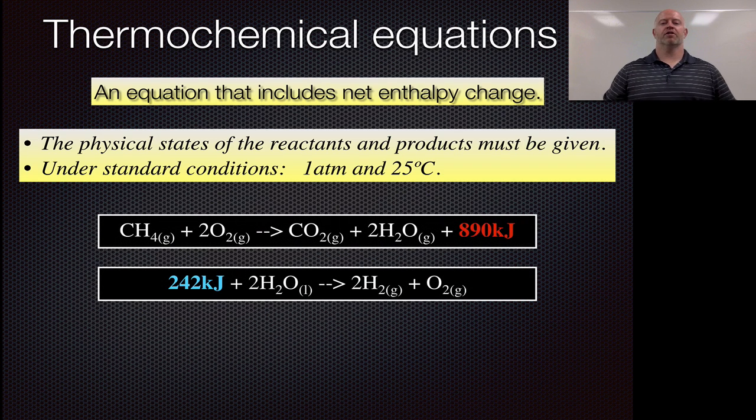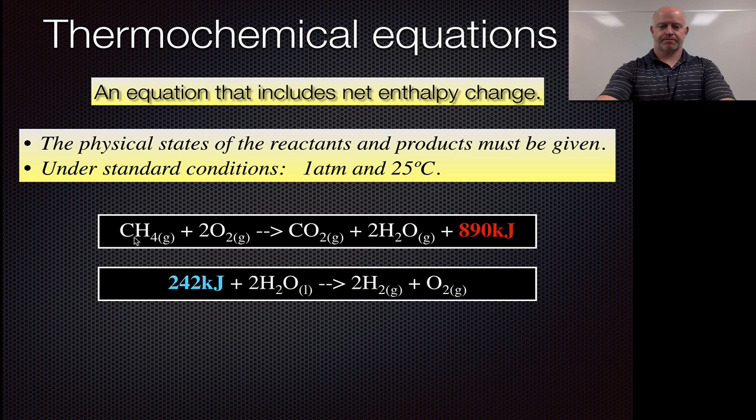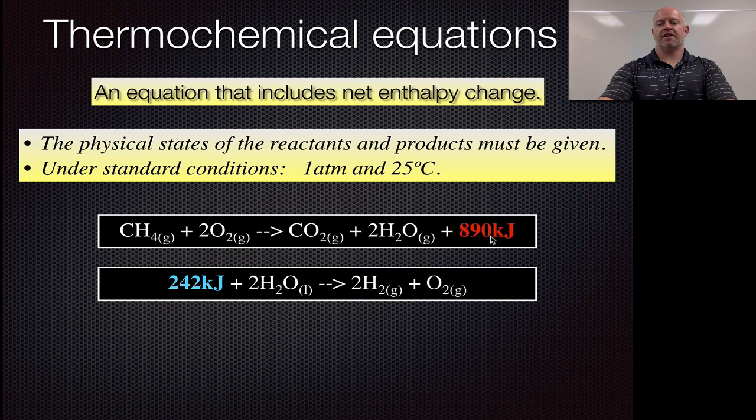So to do that, if you take a look, here are two examples of a thermochemical equation. So we have methane that's reacting with oxygen, so that's just combusting, to make carbon dioxide and water. We see the states of matter in, and you'll notice how it says plus 890 kilojoules.